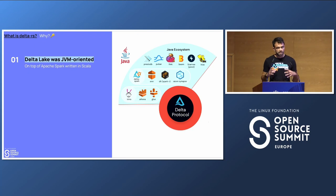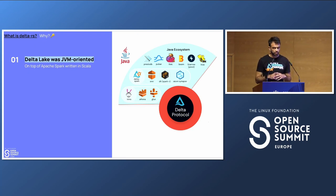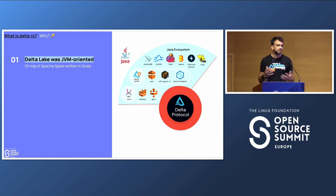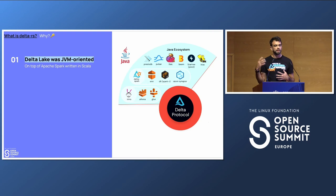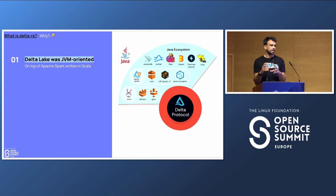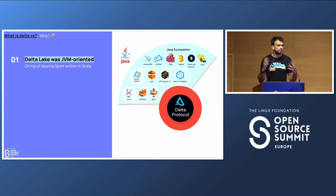Delta Lake was really focused on the Java programming language because it was written on top of Apache Spark, which is in Scala. That's why when you need to use Delta Lake, you have to run an Apache Spark cluster. This design choice led to multiple connectors in the Java ecosystem, like Hive and other libraries.